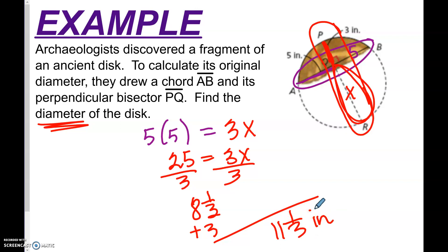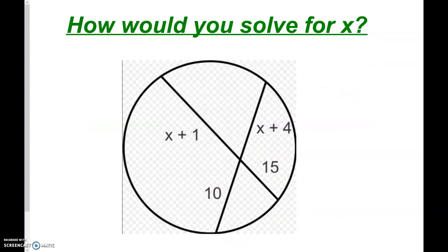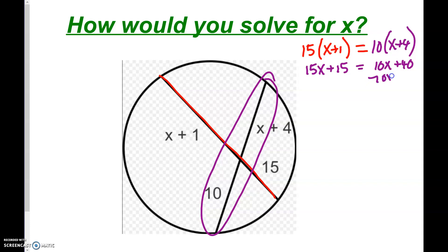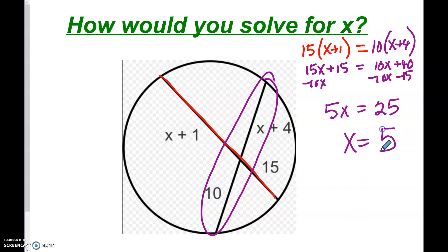Part times part — focus on one whole chord, set equal to the other chord. For the first example: 15 times the other part of the chord equals 10 times (x plus 4). Using the distributive property: 15x plus 15 equals 10x plus 40. Subtract 10x from both sides to get 5x, then subtract 15, leaving 5x equals 25. Divide both sides by 5 and x equals 5. That's the half of the lesson dealing with chords.